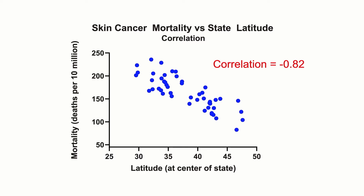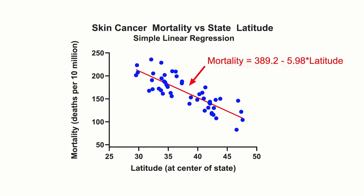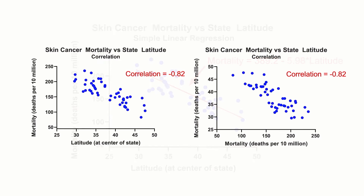However, correlation quantifies the relationship through a single value between negative 1 and 1, whereas regression describes the relationship through an equation of the form y equals a plus bx.